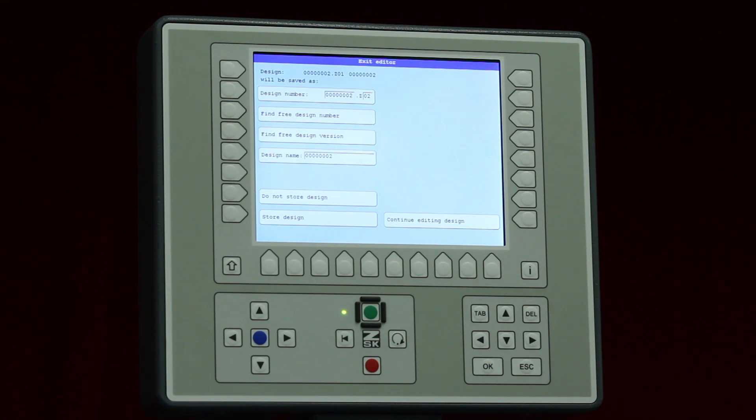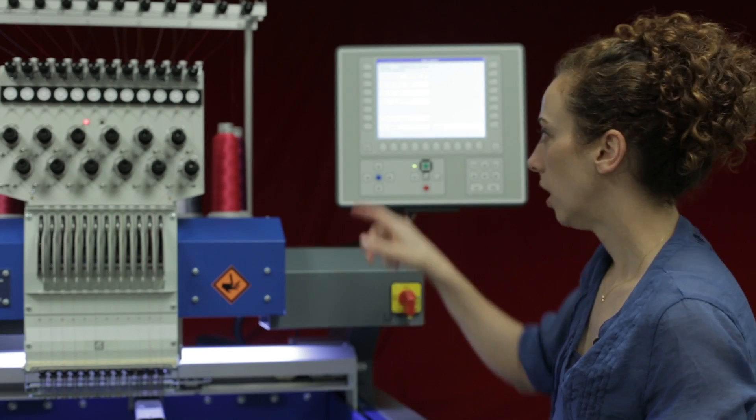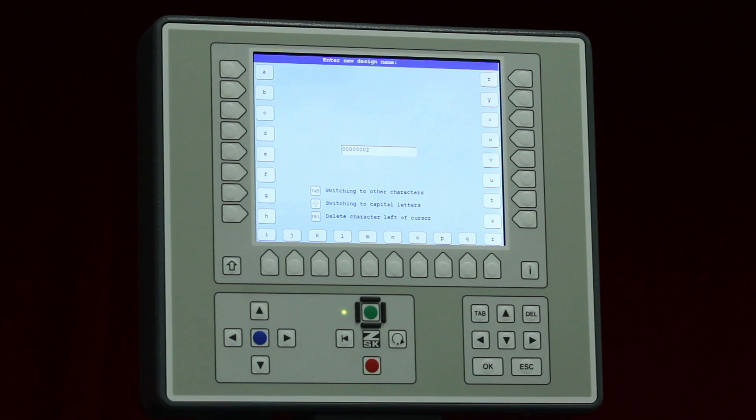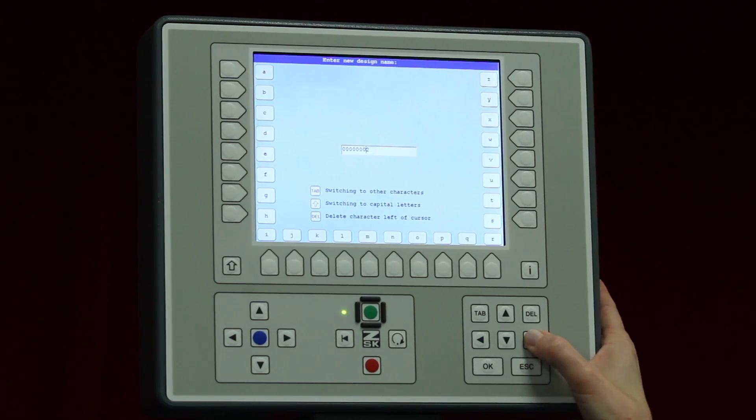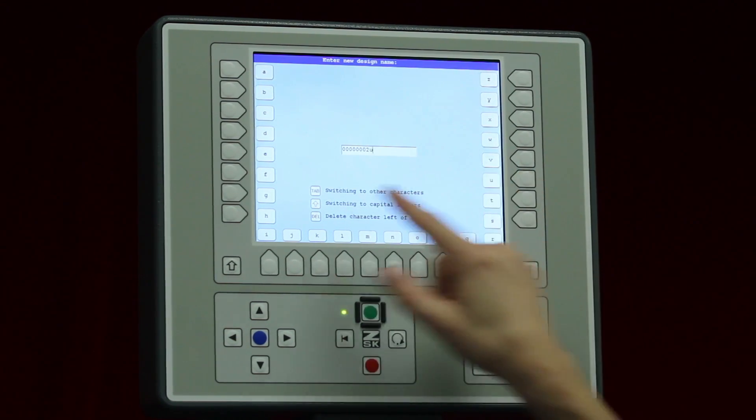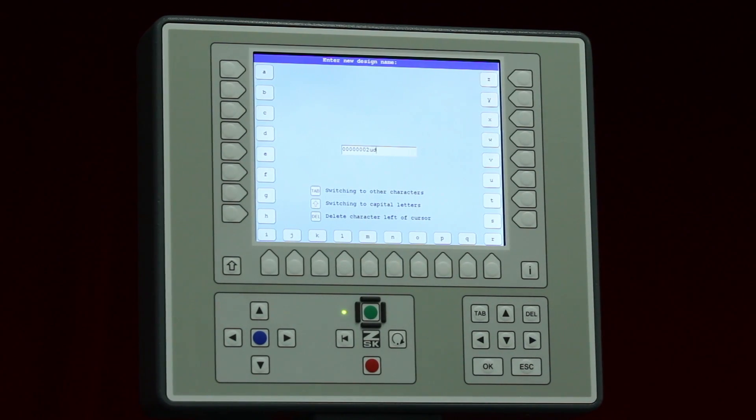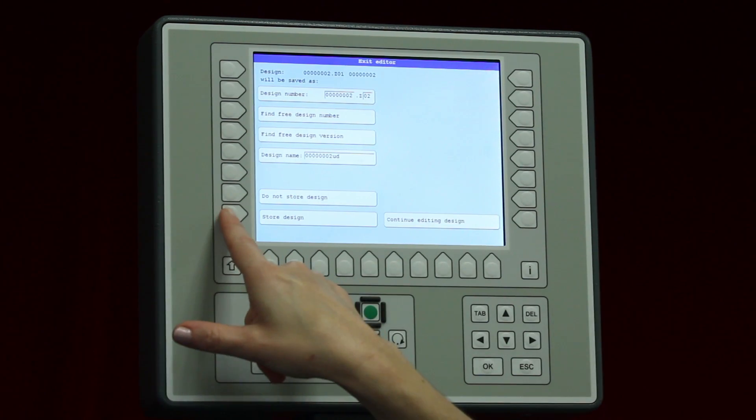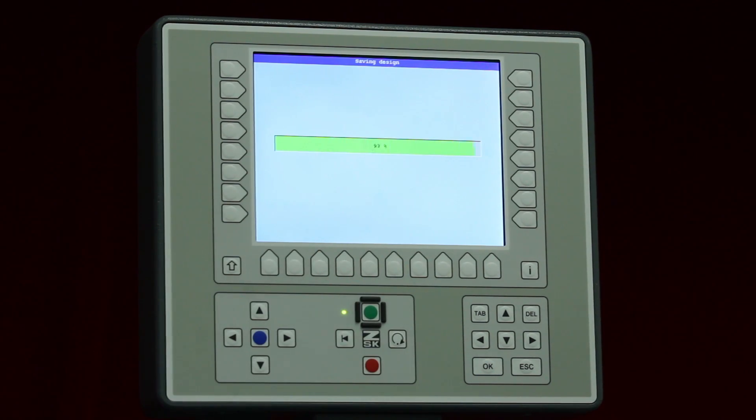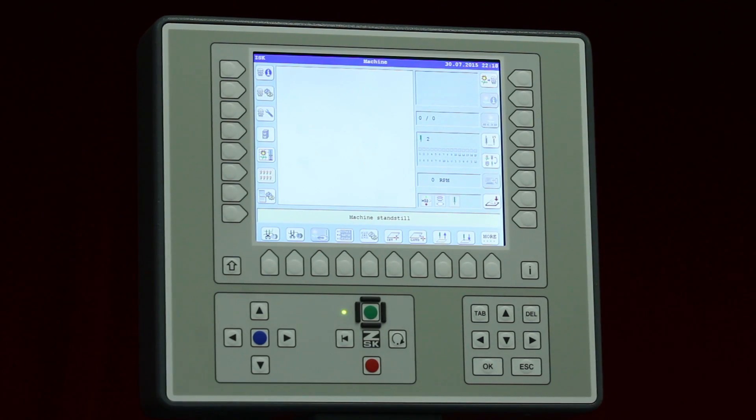I can also change the design name if I'd like. If I'd like to maybe add a UD for upside down, I could click on design name. I'm going to go ahead and arrow over here and I'm just going to type in UD for upside down. I'll go ahead and hit OK here and I will store that design. And after I've stored it now I can go and load that design from my internal memory.